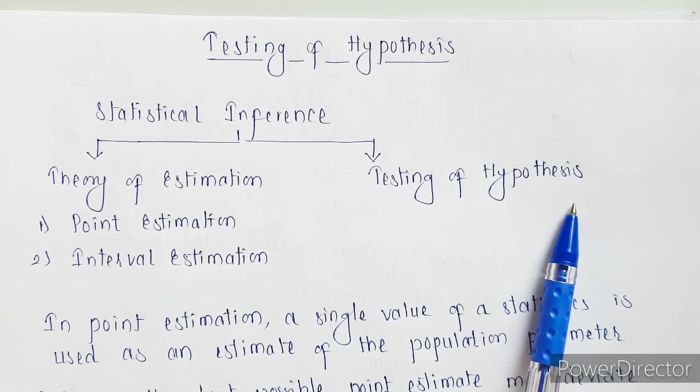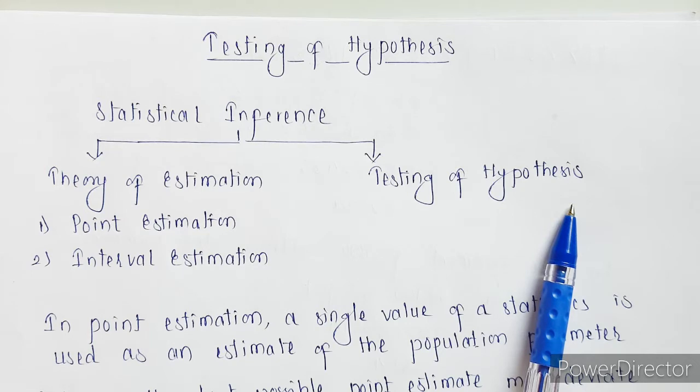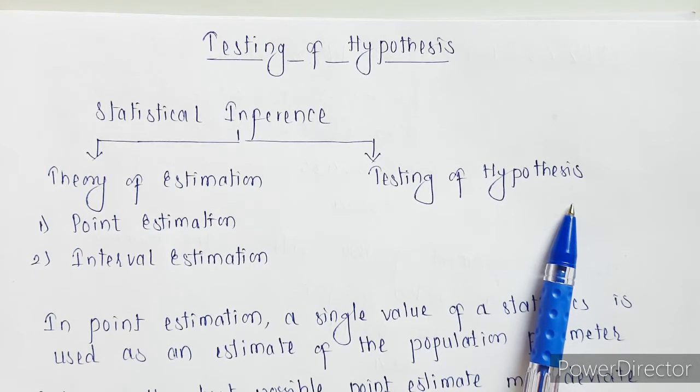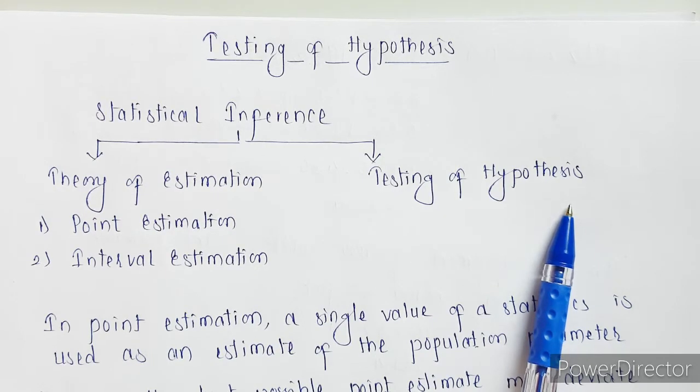Basically given any population, what we will do is we just take a sample, a smaller sample, and then generalize the result for the population. But whenever we are generalizing the result for population, we actually don't know to what extent it is correct.